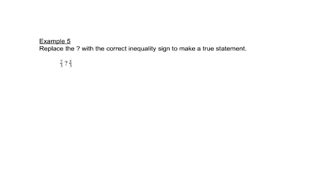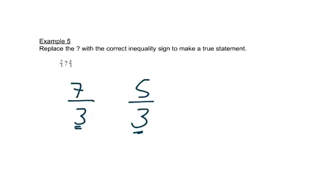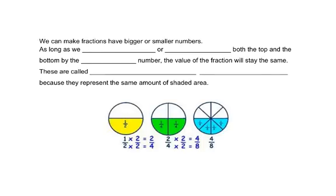Now we want to compare two fractions: 7 thirds and 5 thirds. Each circle is cut into 3 pieces. 7 thirds means we have 7 pieces shaded, while 5 thirds means 5 pieces shaded. Since 7 pieces shaded is more, we open our inequality sign toward the bigger fraction, 7 thirds.